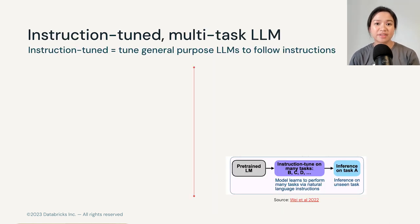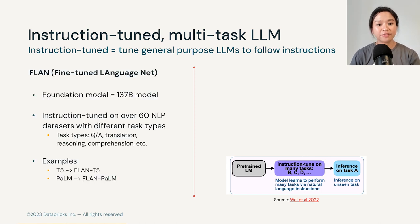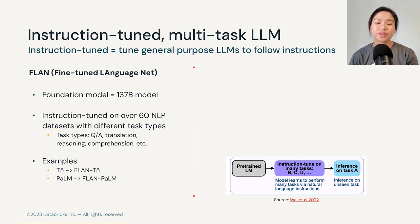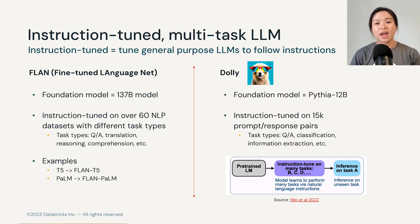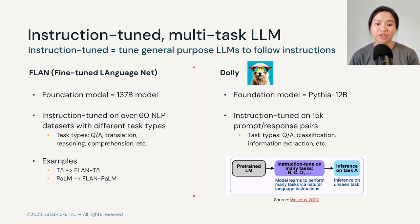Now let's look at a couple of other examples of popular instruction-tuned multi-task LLMs. The first is called FLAN, which stands for Fine-Tuned Language Net. The foundation model is a 137 billion parameter model, fine-tuned on over 60 NLP datasets with different task types. Examples of FLAN-flavored models include FLAN-T5 and FLAN-PaLM. Another example is Dolly, where the foundation model is Pythia, a 12 billion parameter model, fine-tuned on 15,000 pairs of prompts and responses.